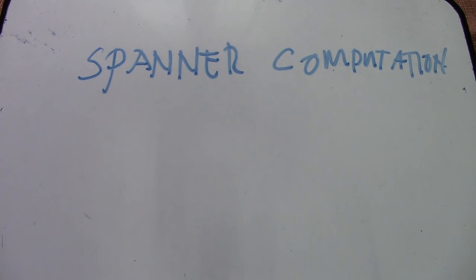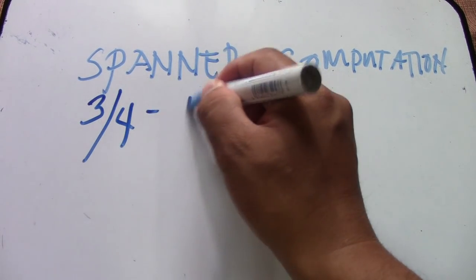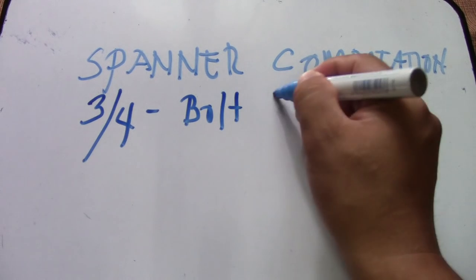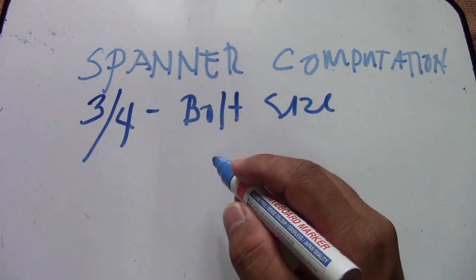Let's say we have a bolt size. First is bolt size. Let's say we have three-fourths, so this is our bolt size, three-fourths. This is a great example.